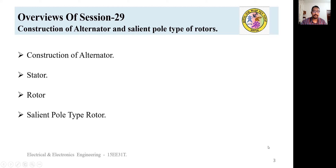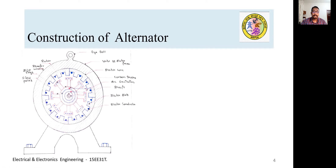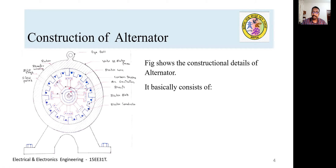The construction of the alternator is shown in a detailed labeled diagram of a three-phase alternator. All the labeled parts have been broadly classified into three groups: the stationary part, the rotating part, and the exciter. So it basically consists of a stator (stationary part), a rotor (rotating part), and the exciter.